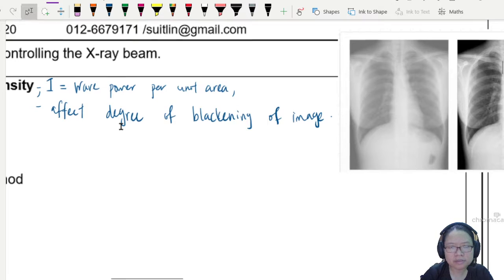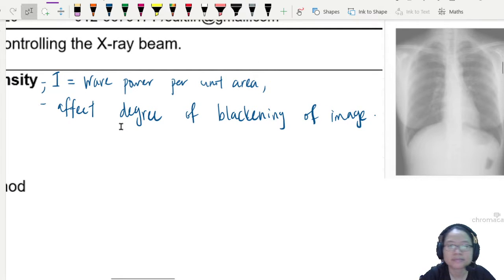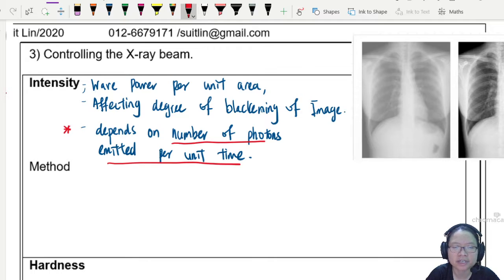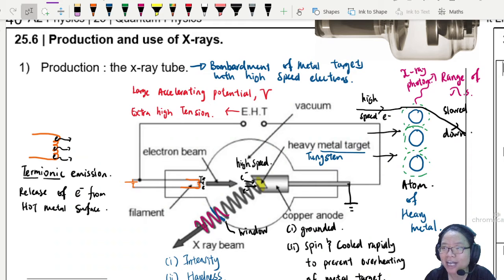What allows us to control the degree of blackening? This intensity, which is wave power per unit area, will affect the degree of blackening in our X-ray. And this depends on the number of photons emitted per unit time. But what causes us to have more number of photons emitted per unit time? We need to whack the target metal with more electrons, just bombard more.